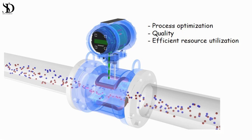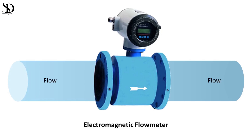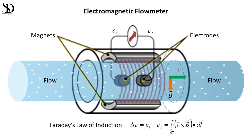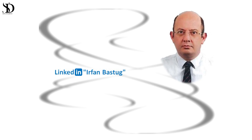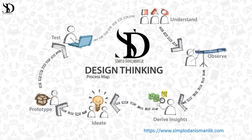In conclusion, flow measurement is a pivotal aspect across various industries, playing a vital role in optimizing processes, maintaining quality, and ensuring efficient resource utilization. Accurate and reliable flow measurement technologies continue to evolve, addressing challenges and contributing to enhanced operational efficiency. If you have complex or specific scientific questions or engineering problems regarding these topics, you can contact me. Thank you.